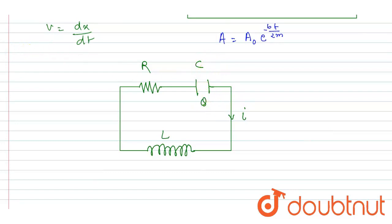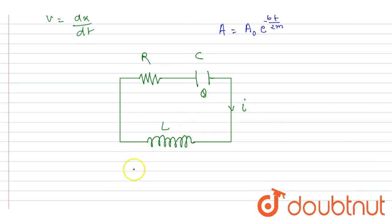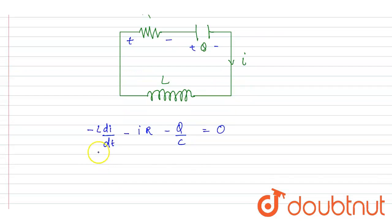If you write down the potential difference across each one of them, it will be minus L di/dt for the inductor. If you move across the resistor, the potential decreases by minus IR, and if you cross the capacitor, it decreases by Q/C. Net potential drop in a circuit is 0.